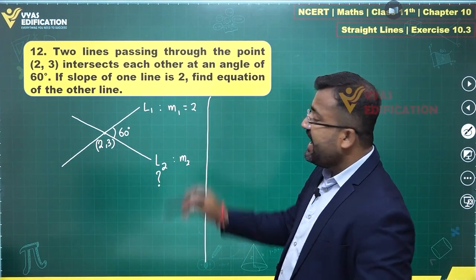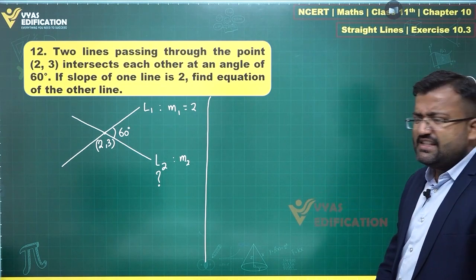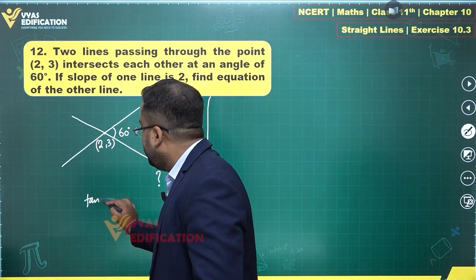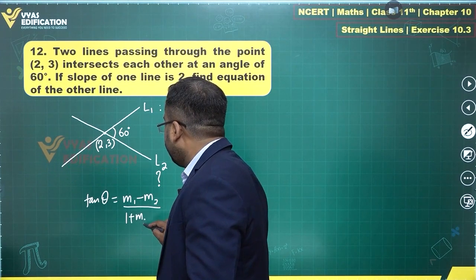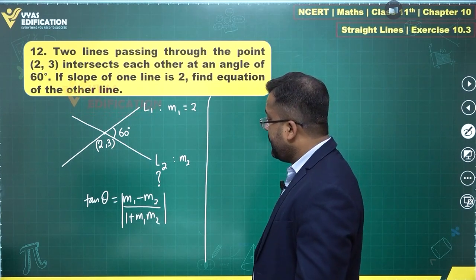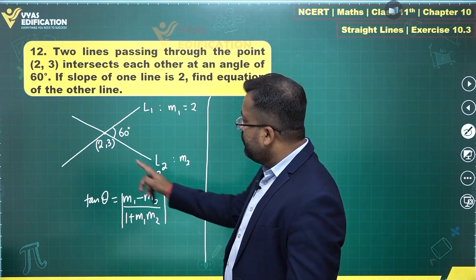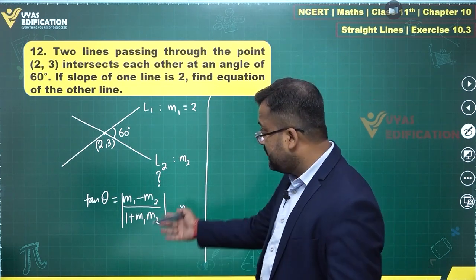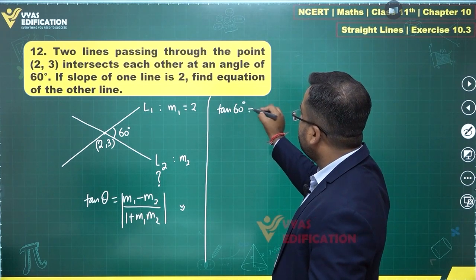The angle between the lines is 60 degrees. We can apply the formula: tan θ = |(m1 − m2) / (1 + m1·m2)|. Using this, we can find m2. Once we have m2 and the point (2, 3), we use the point-slope form to get the equation of L2.